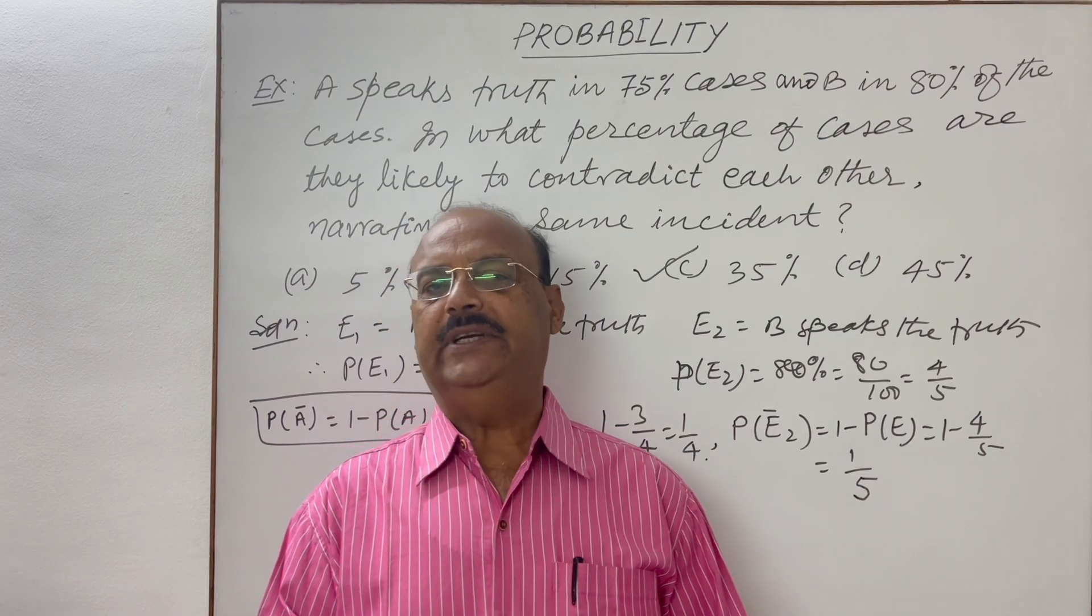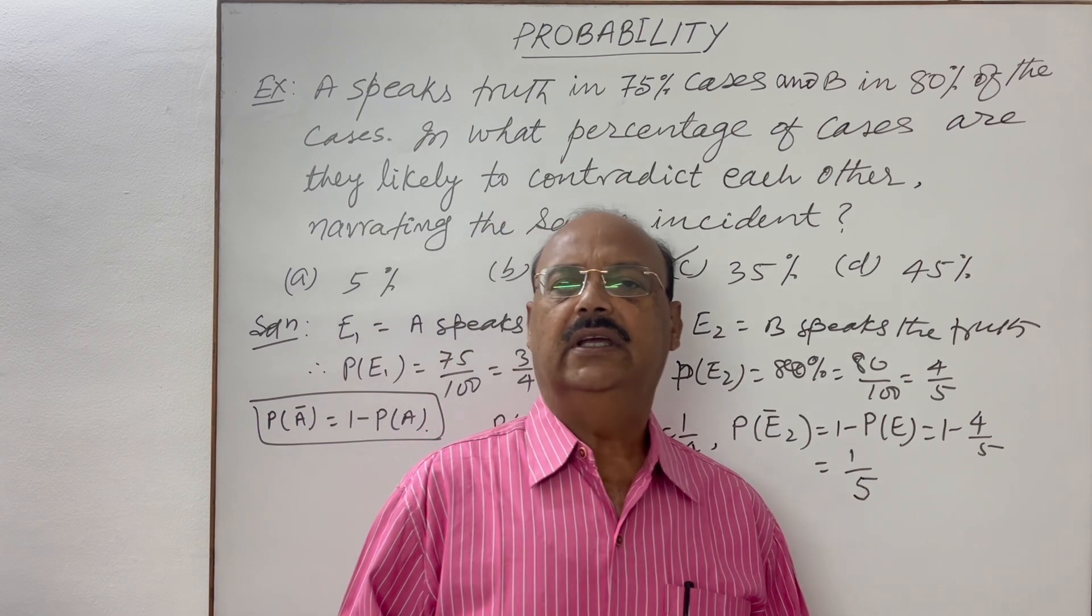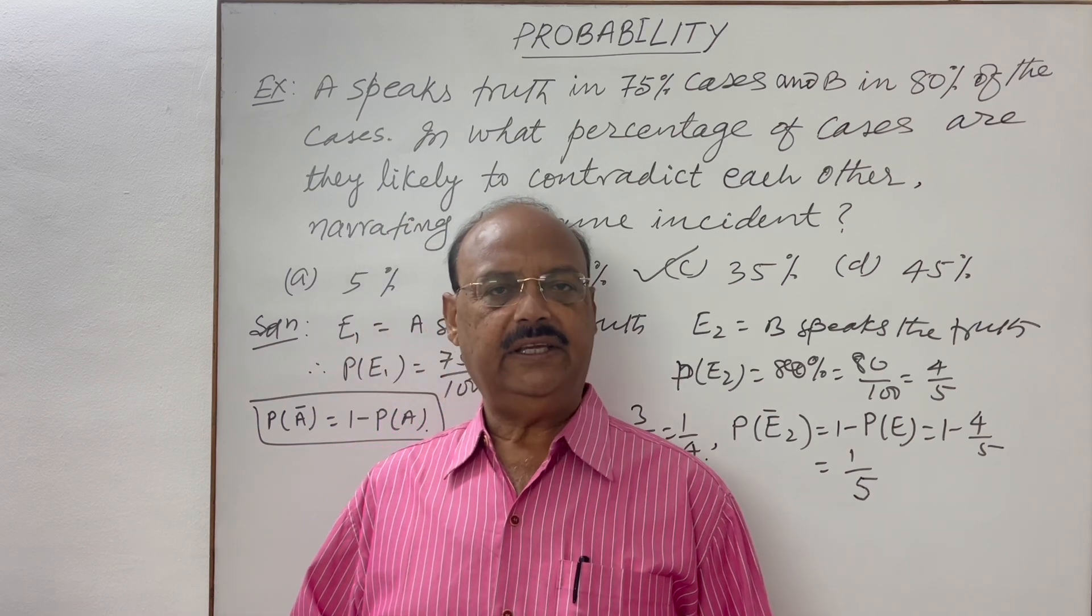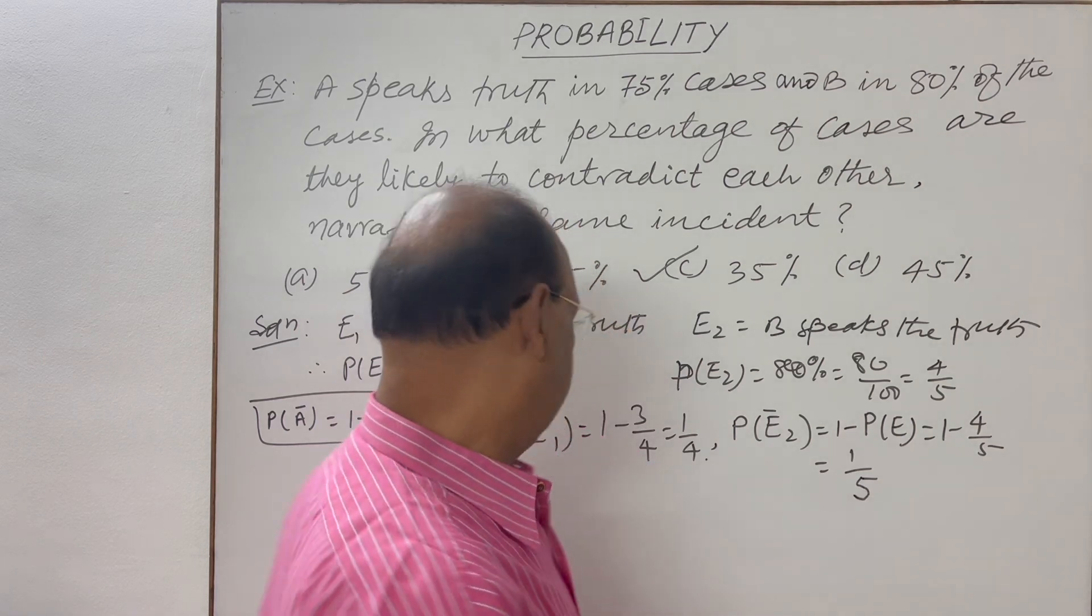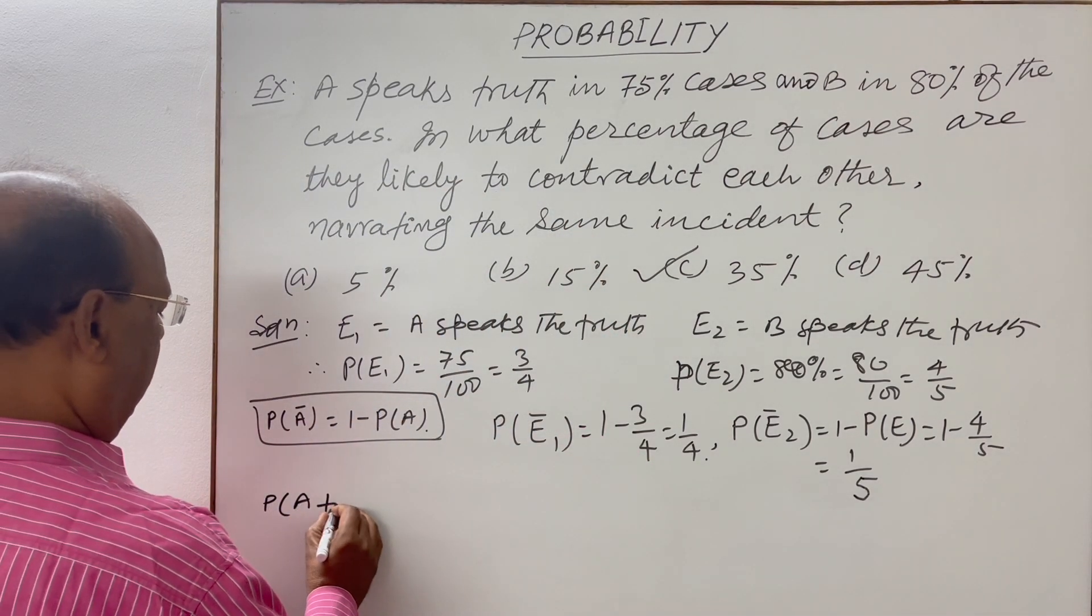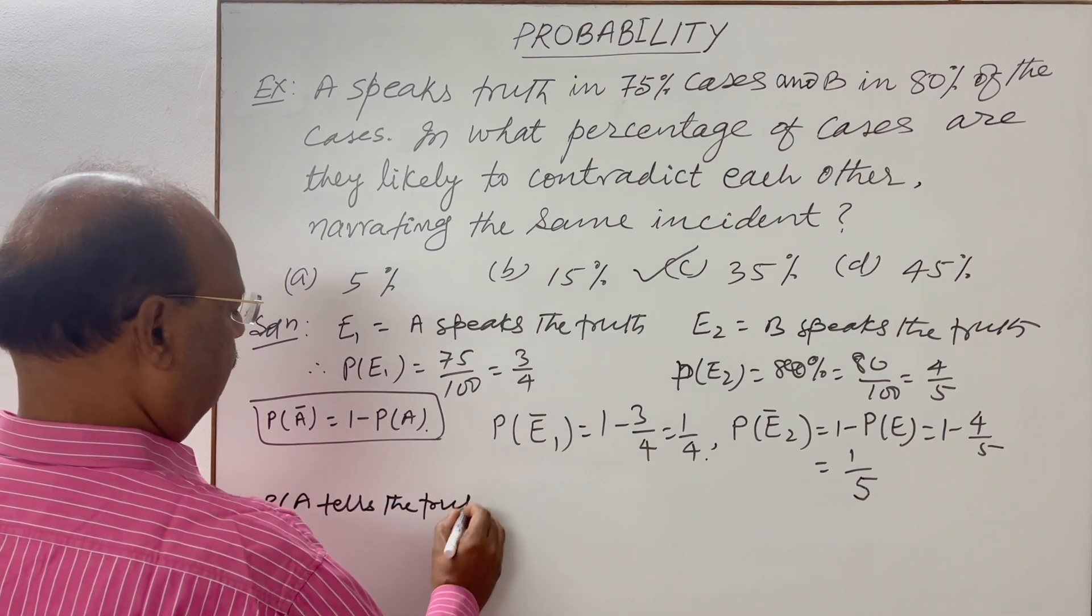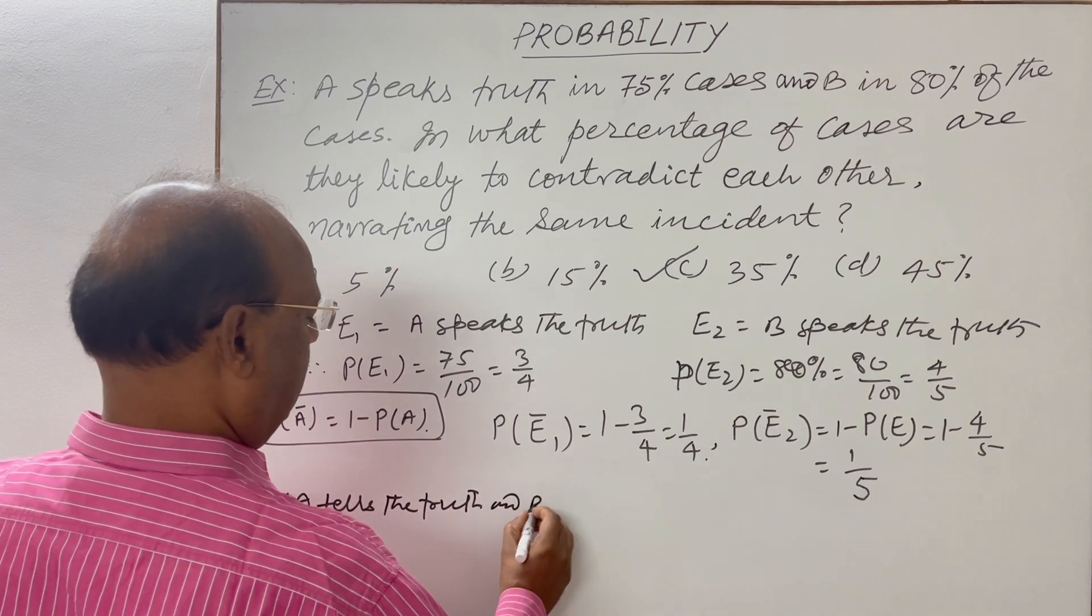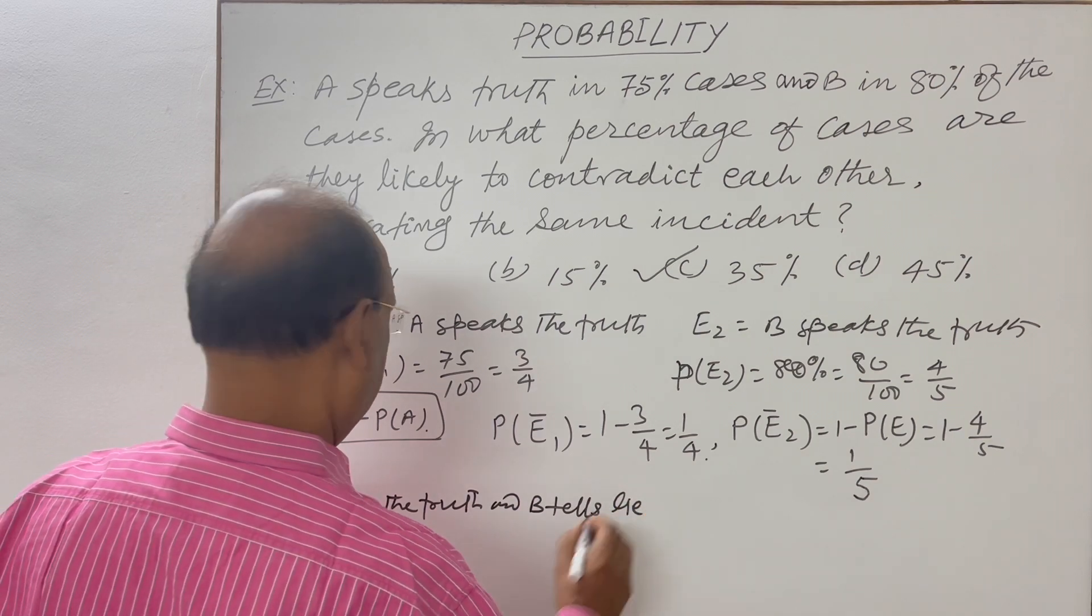So now we will find out the probability of A contradicts B. Means if A tells the truth, B tells lie. And if A tells lie, B tells the truth. Means here we have to find out now probability of A tells the truth and B tells lie.